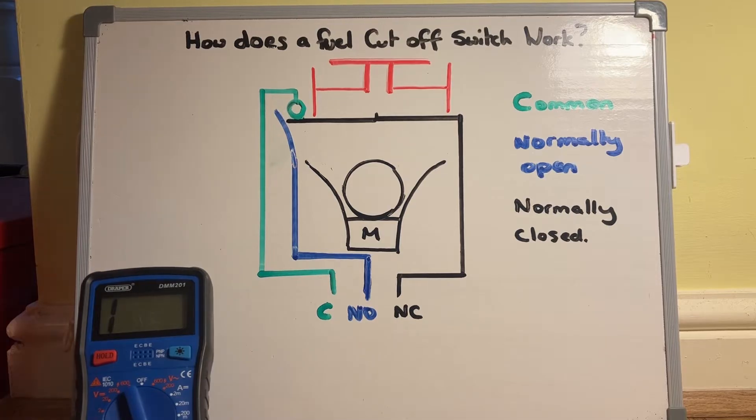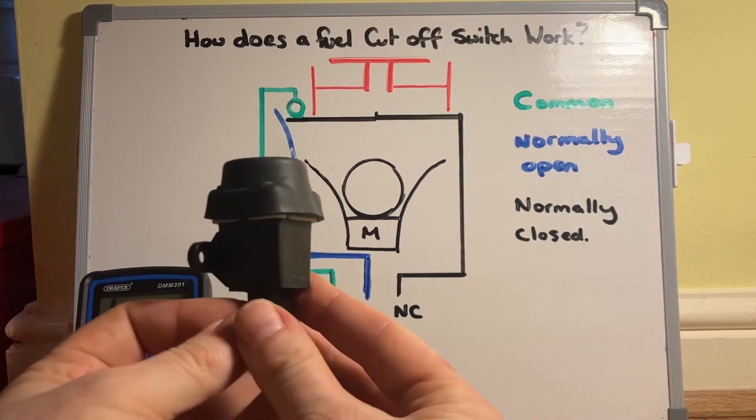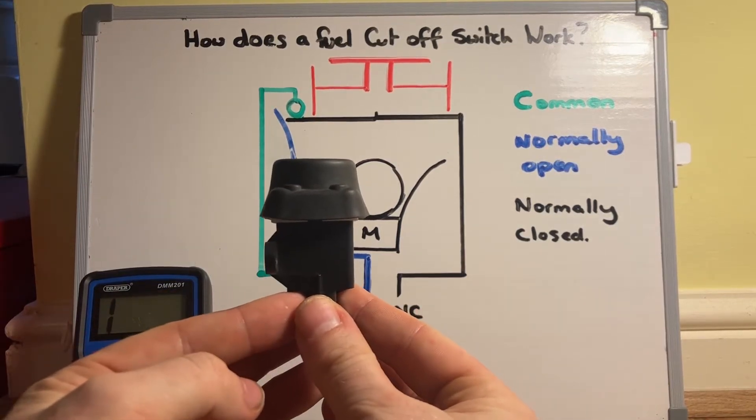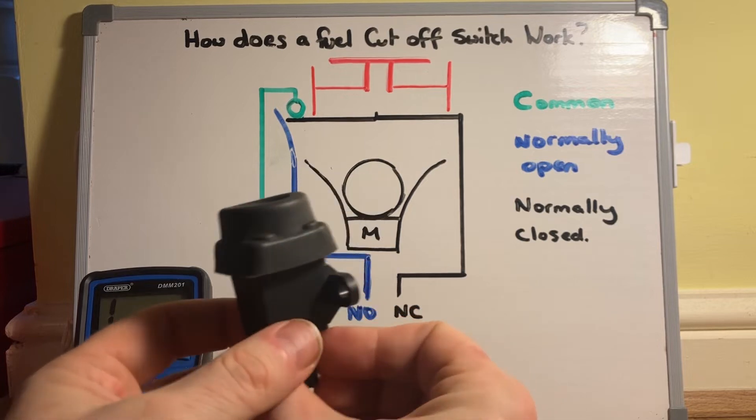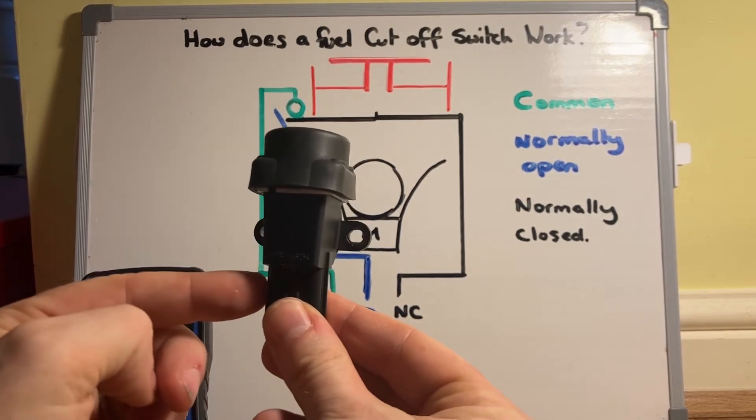So where are they normally located? They're normally found inside the engine bay, down one of the chassis rails, down the side of the engine somewhere, and they are always sat in a vertical position like that with a plug sat to the bottom.